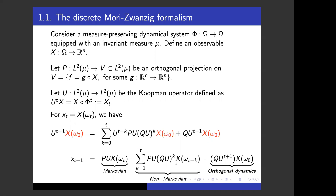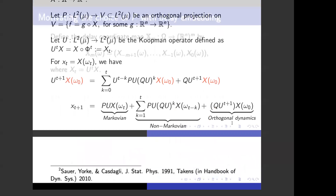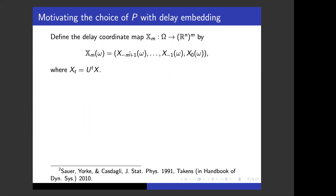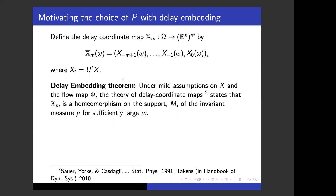In the next slide, I review delay embedding theory to motivate a particular choice of projection operator P. Define the delay embedding coordinate map, script X_M, which maps omega to the observables at time zero, time minus one, and so on. X_0 is exactly equal to X by this definition. The delay embedding theory states that under mild assumptions, this map script X_M is a homeomorphism on the support of the invariant measure — the set M — for large enough M.